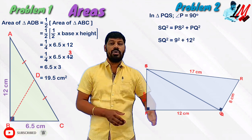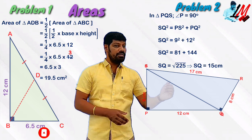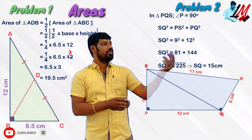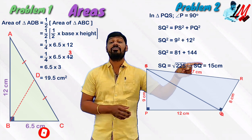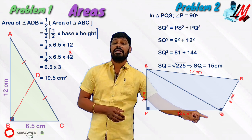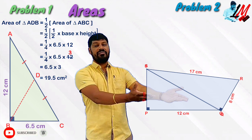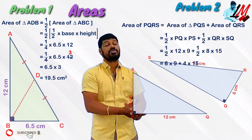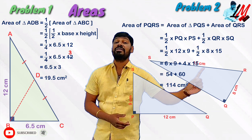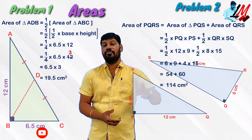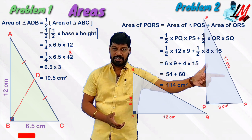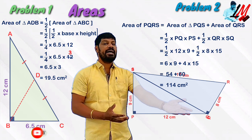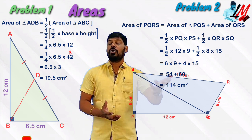In triangle PQS with the right angle, QS squared equals PQ squared plus PS squared. Once we find QS, we can calculate the areas of both right triangles separately using the half into base into height formula, and then add them together to get the total area of the quadrilateral PQRS. This uses basic formulas and basic concepts.